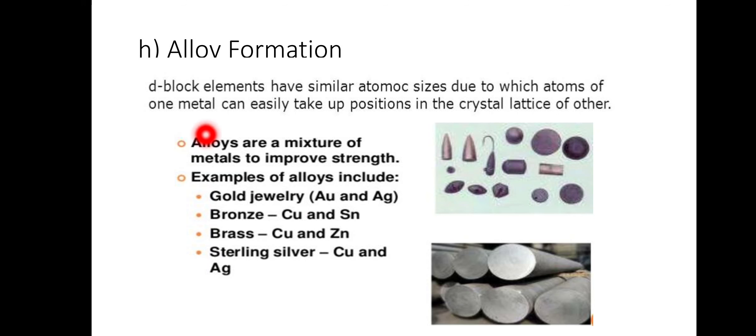Alloy formation - d-block elements have similar atomic size due to which atoms of one metal can easily take up position in the crystal lattice of the other. Alloys are a mixture of metals to improve strength. Examples of alloys include gold jewelry, bronze, brass, sterling silver - copper and gold.